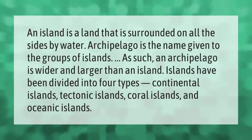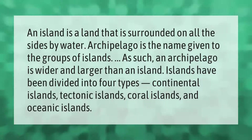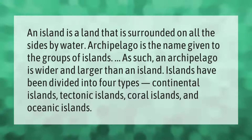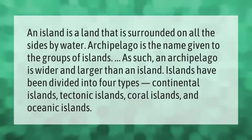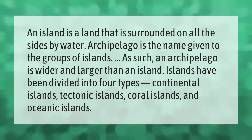An island is a land that is surrounded on all sides by water. Archipelago is the name given to groups of islands; as such, an archipelago is wider and larger than an island. Islands have been divided into four types: continental islands, tectonic islands, coral islands, and oceanic islands.